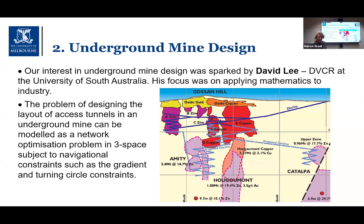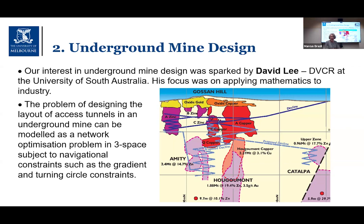What do you think of when you think of an underground mine? Here you see a figure of Gossan Hill. An underground mine is a series of so-called declines — large tunnels — and the haulage trucks drive down from the surface to various ore bodies underground, collect the ore which has been drilled and blasted, and take it back to the surface for processing to extract the gold or other metals.